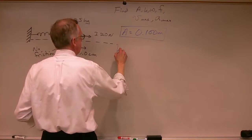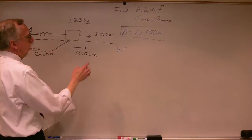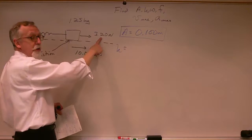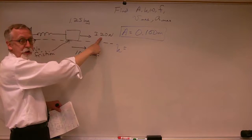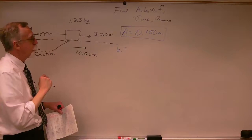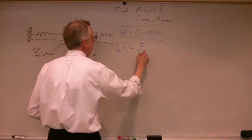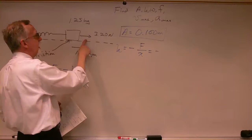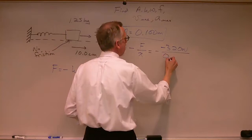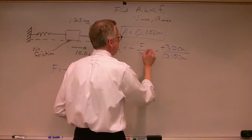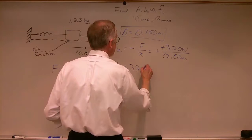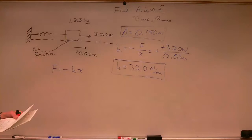What about the spring constant? We displace it 10 centimeters and that requires a force of 3.20 newtons. The spring pulls back with the same force of 3.20 newtons. We know the spring force is minus kx, so k equals minus force over x — that's minus 3.20 newtons divided by 0.100 meters. So k is 32.0 newtons per meter.